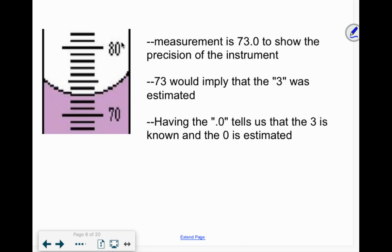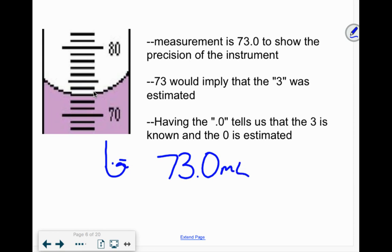Here is a graduated cylinder. Here's 70, here's 80. These tiny marks are going up by ones. If you have to the ones place, you get to estimate one more place value, so you should have one decimal. It looks like it's at the 73 mark. But because you need one more place value, if you think it's exactly on that 73 mark, you have to put 73.0 milliliters — you need a unit. Having the 0 tells us that the 3 is known and the .0 is estimated.